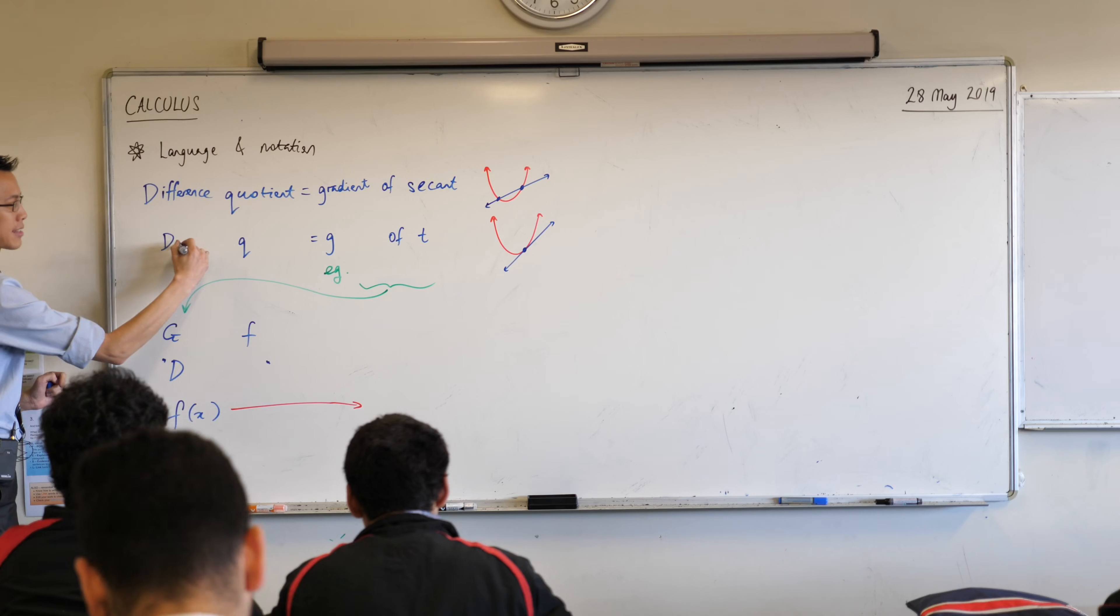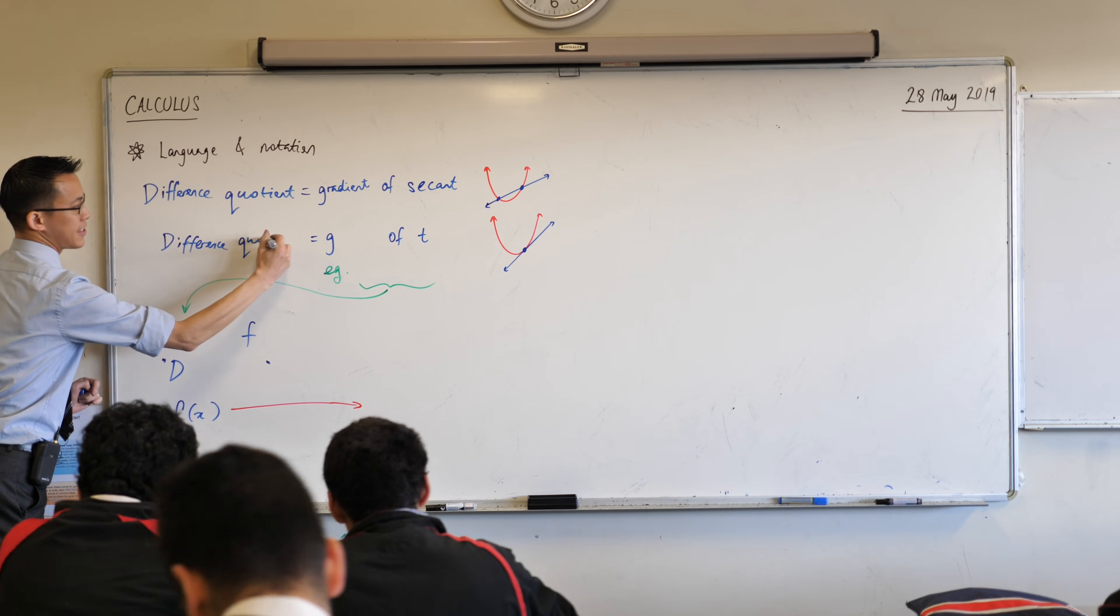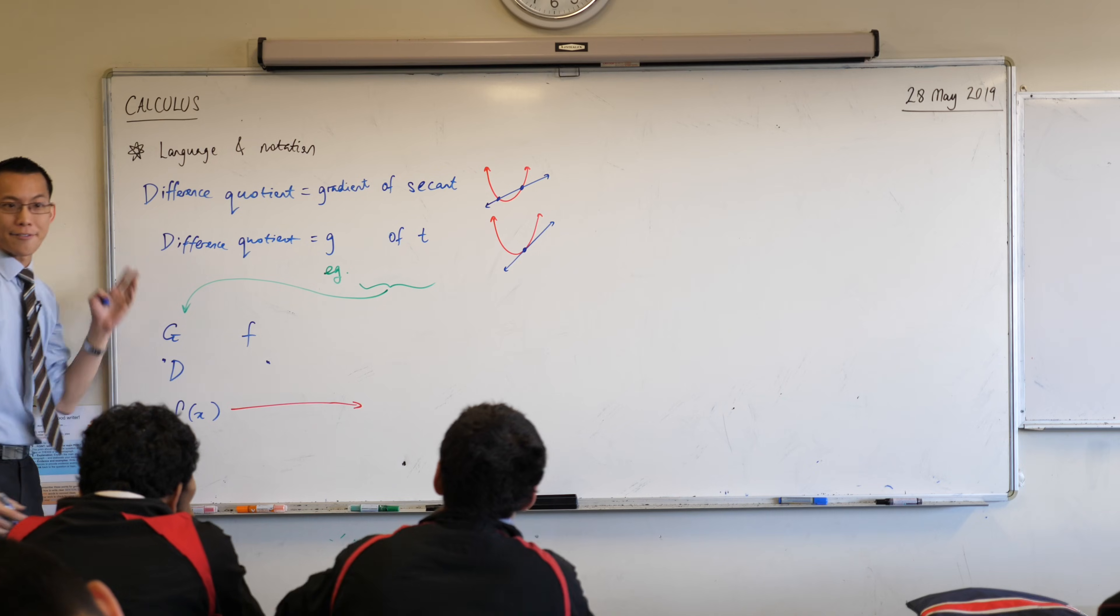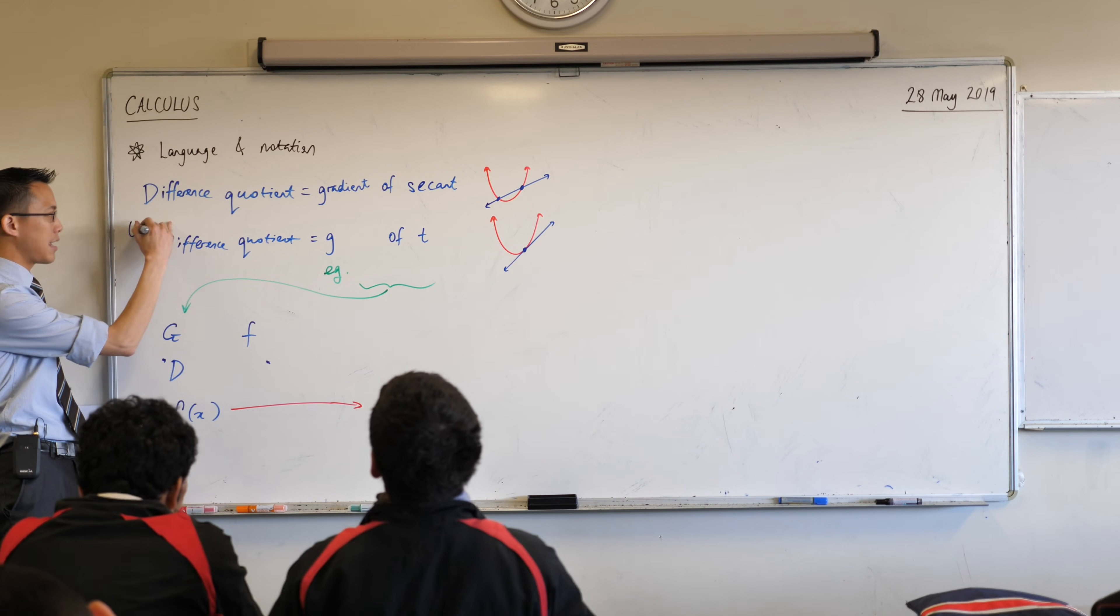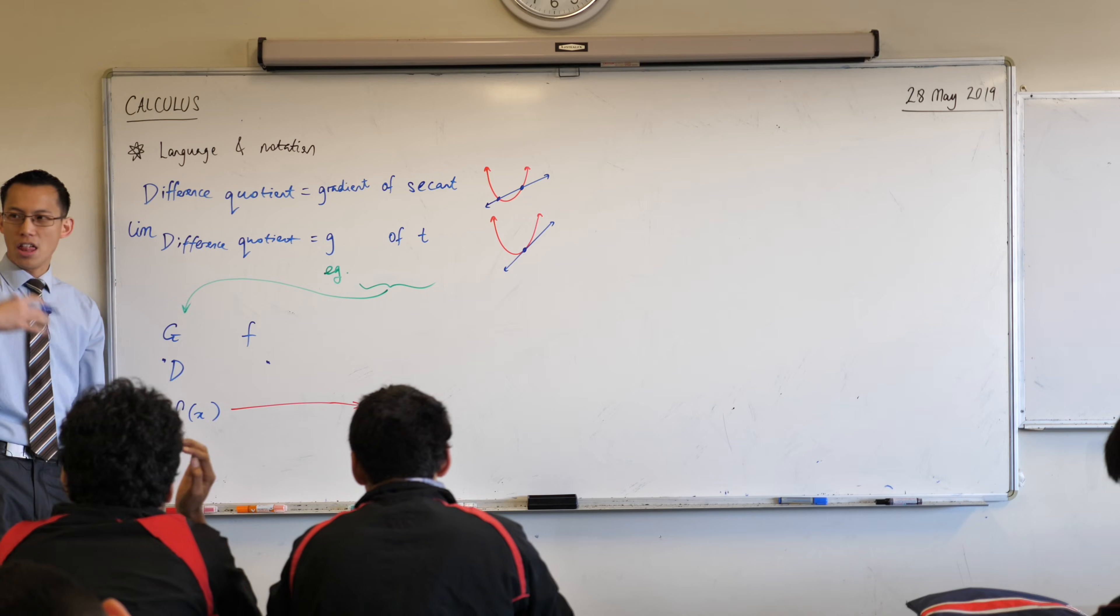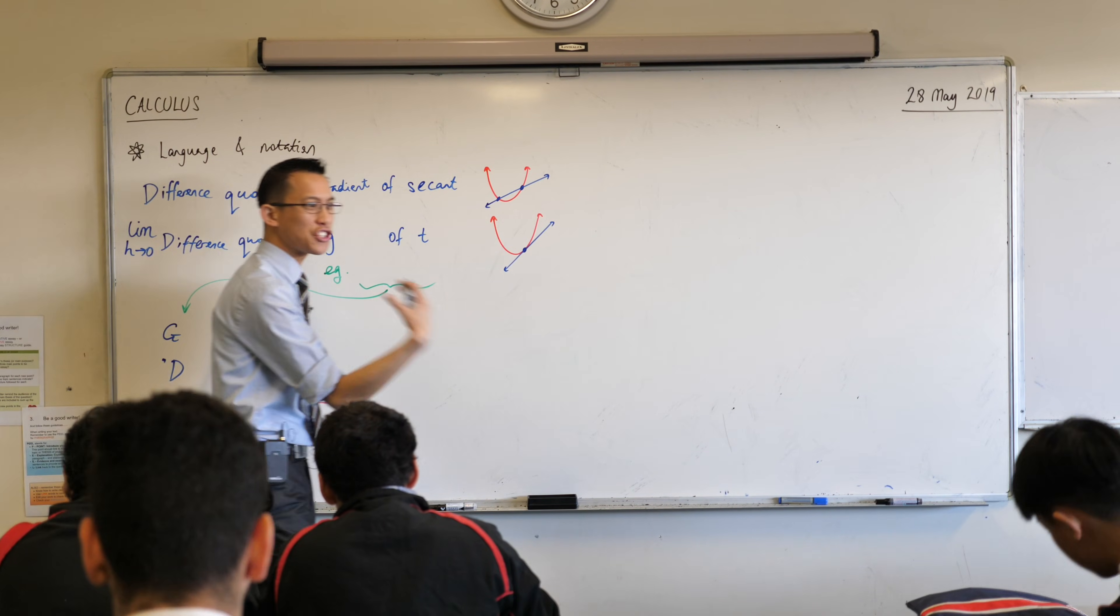What I did was I took that same difference quotient, and instead of just evaluating that fraction and simplifying it, right, we did a whole bunch of algebra in there, what we did was we said, what if we could take the limit as h approaches zero? Where is it going, right?